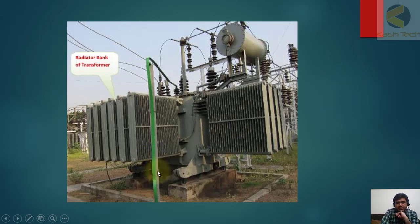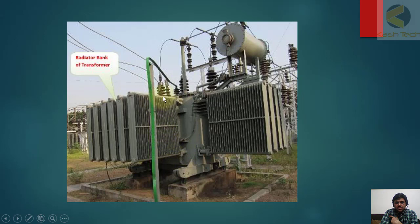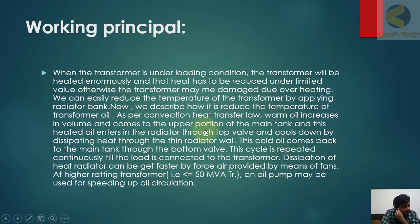Here you can see these are called fins — these are the radiators. This is the one main pipe which is connected to the main tank at this point, and through the fins it is connected to another pipe on the main tank. You can see the radiator bank of the transformer.